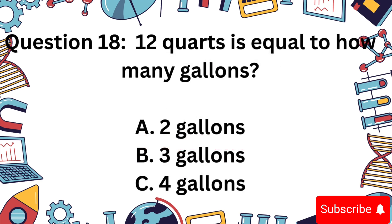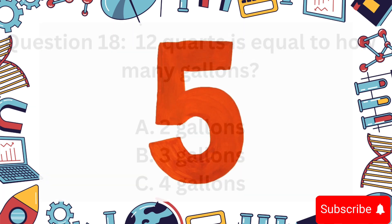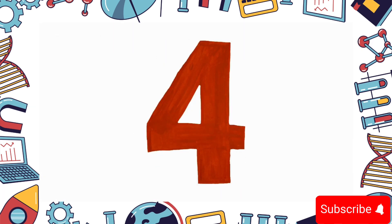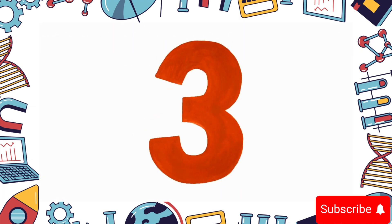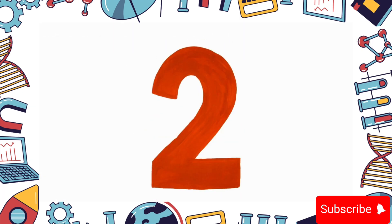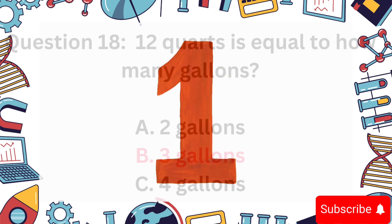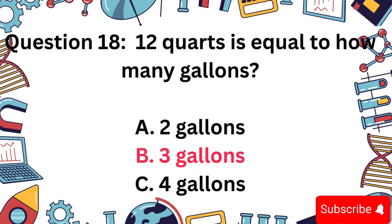Question 18. 12 quarts equals how many gallons? A: 2, B: 3, or C: 4? The answer is B: 3 gallons. 12 divided by 4 equals 3.